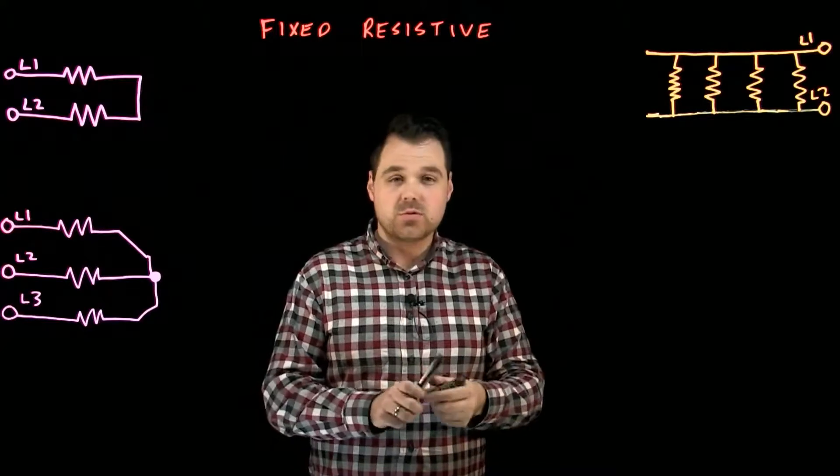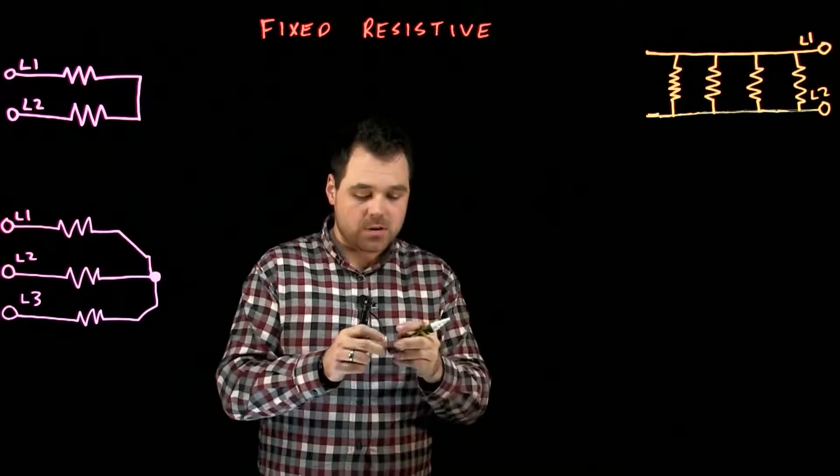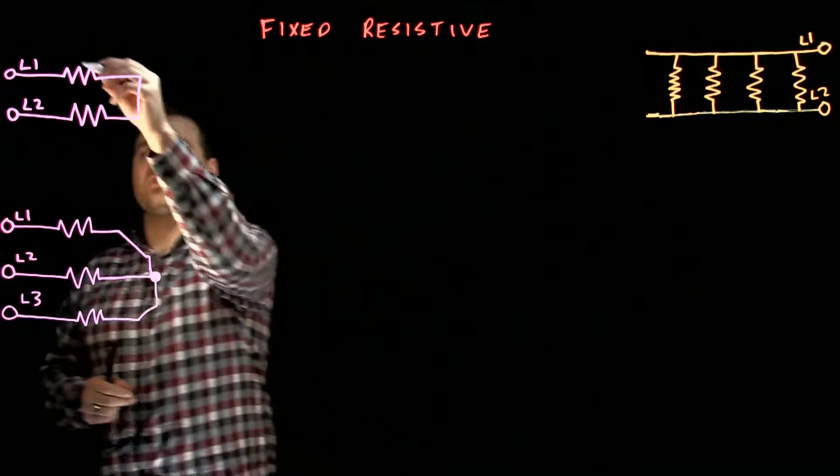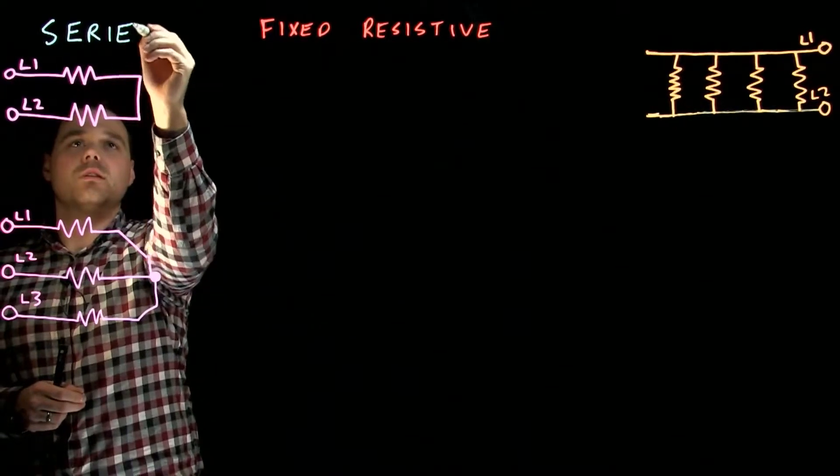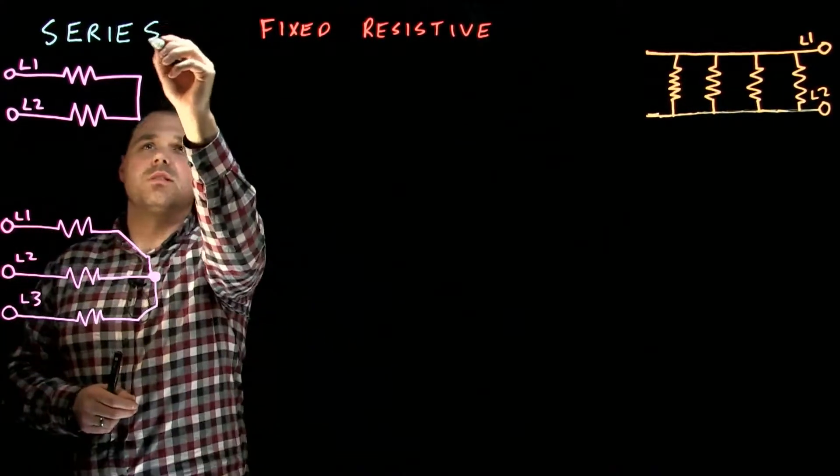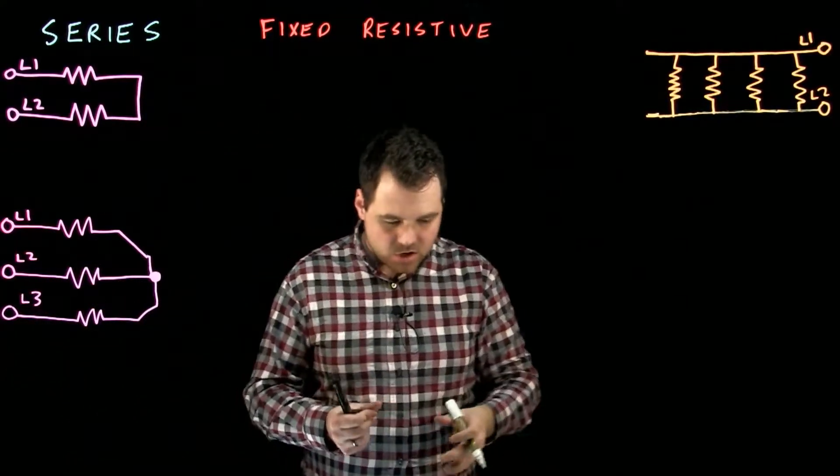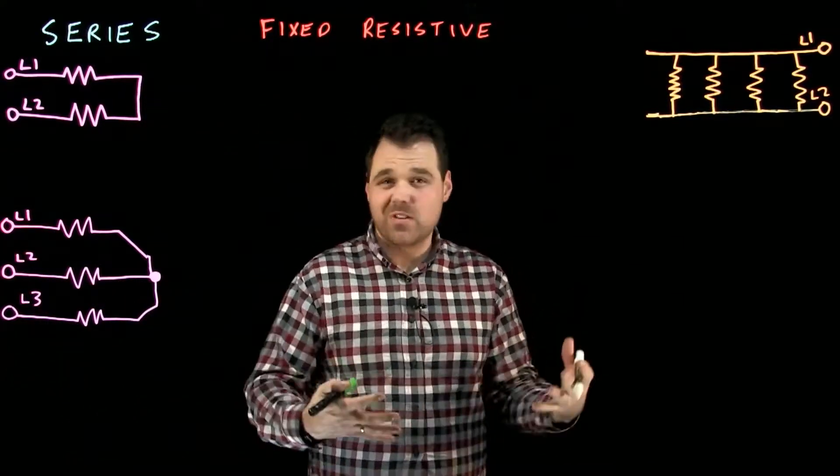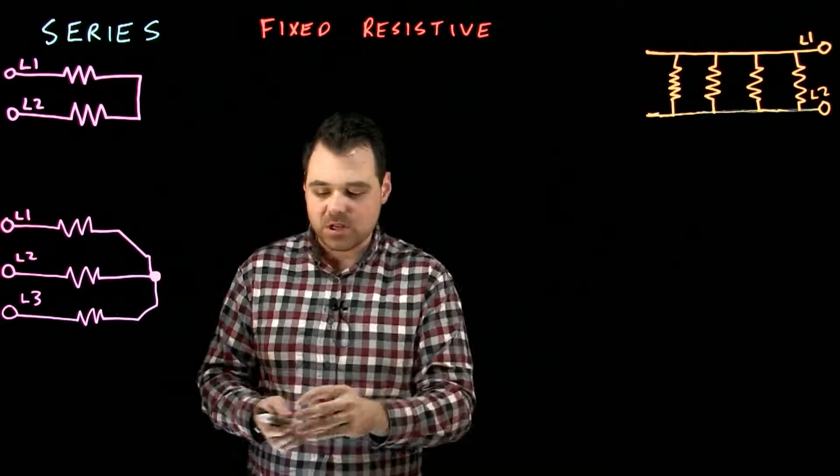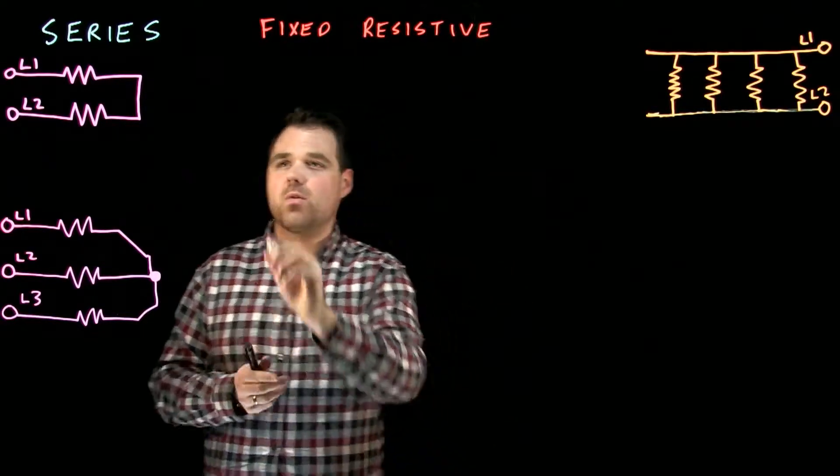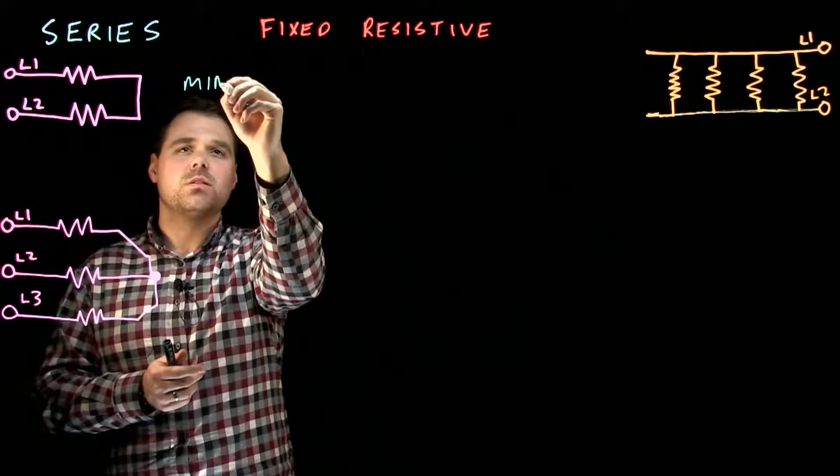So I want to talk about two different types. The first one I want to talk about is series. So series fixed resistive heat trace. Now there's actually two different ways we can manufacture series resistive heat trace. The first one I want to talk about is called MI or mineral insulated.